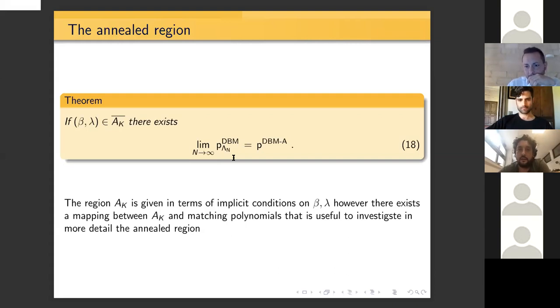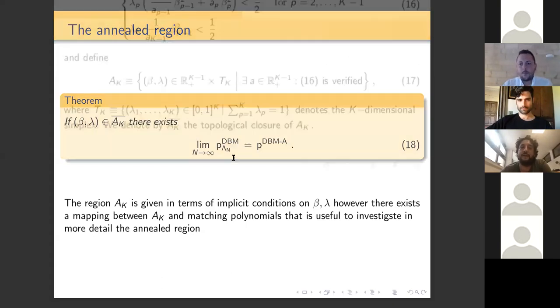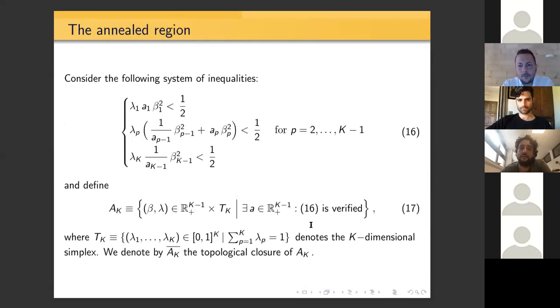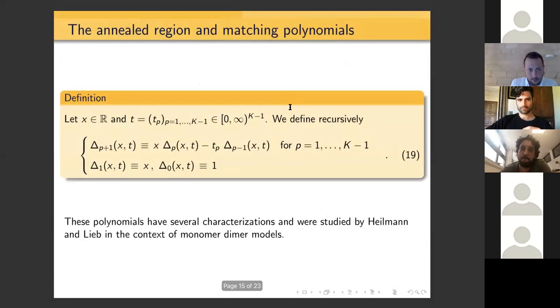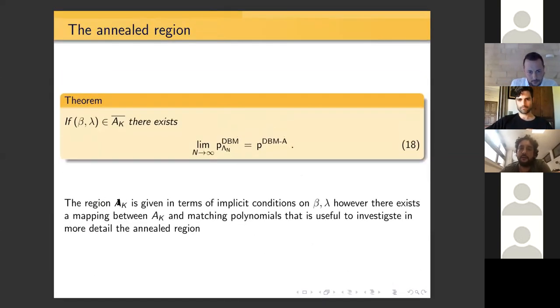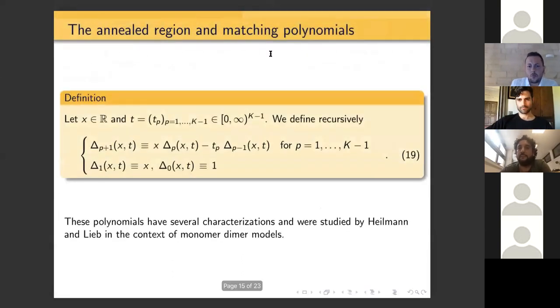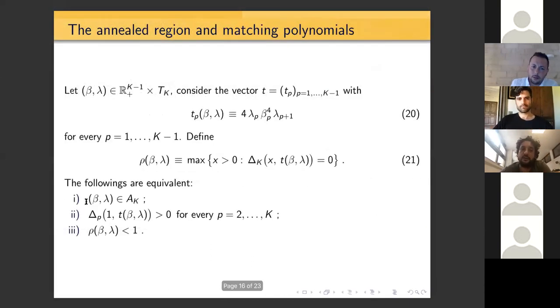Sorry, if I interrupt you, you have just roughly a minute. Okay, so very quickly, this condition for A_K is very implicit because, you see, it's a mess if you like. Anyway, there is an interesting connection between this region A_K and some matching polynomial that comes from monomer-dimer models. So basically, the condition that (β, λ) belongs to A_K is equivalent to some other conditions that are more explicit in the parameter (β, λ).